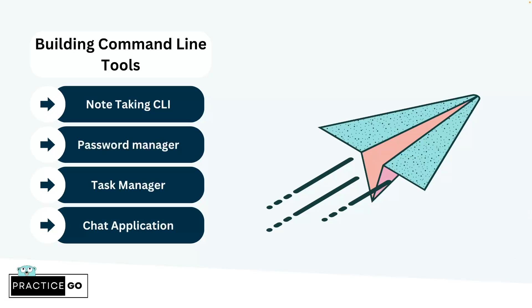As discussed earlier, Golang is very popular for building command-line tools. You can use the Cobra library, which is very popular and is used to build Kubernetes CLI, GitHub CLI, and Hugo CLI. For practice, you can create a CLI note-taking app, a password manager that generates and encrypts passwords, a to-do list or task manager, or a chat application using WebSockets to communicate between CLI applications.